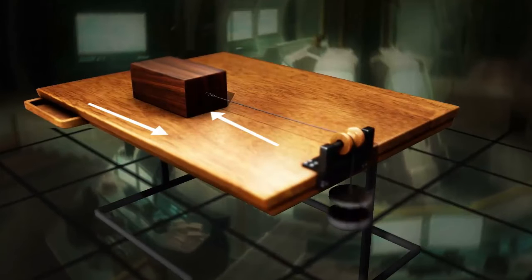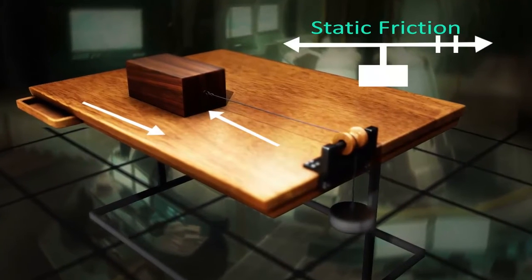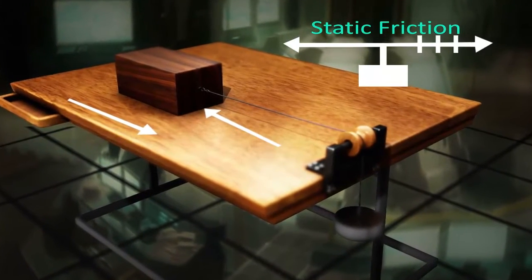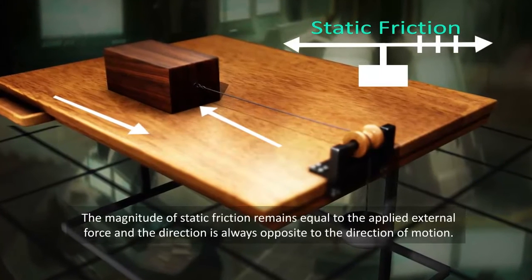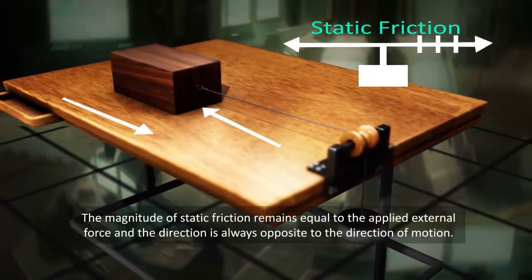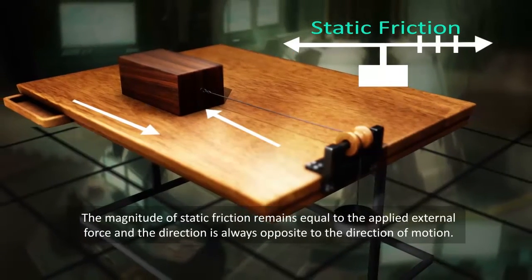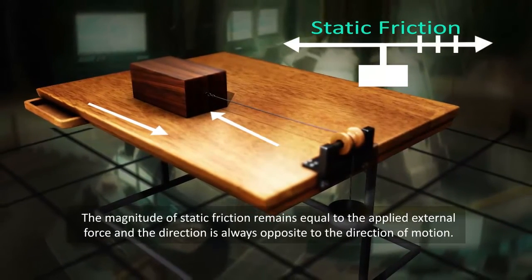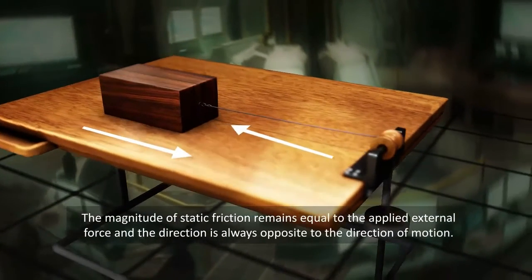Static friction comes into play when a body is forced to move along a surface but movement does not start. The magnitude of static friction remains equal to the applied external force, and the direction is always opposite to the direction of motion.